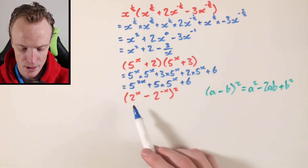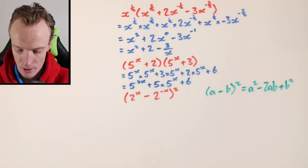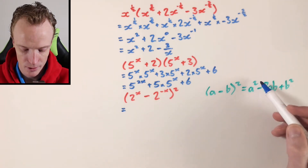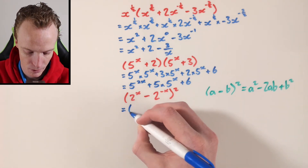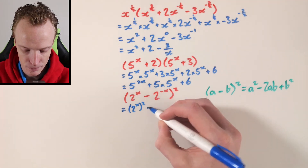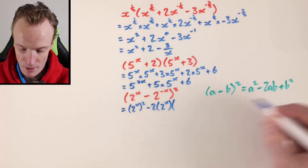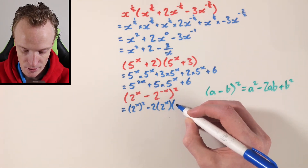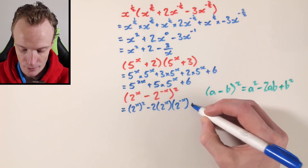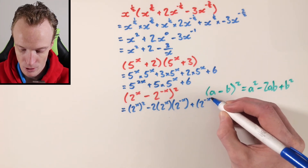I can look at this and say, well, this is the same thing, except my a is now 2 to the power of x, and my b is 2 to the power of negative x. So to simplify, it's going to be my a squared — 2 to the power of x, all squared — then subtract 2 multiplied by my a, which is 2 to the power of x, multiplied by my b, which is 2 to the power of negative x. And then I can add my b squared, which is 2 to the power of negative x, all squared.